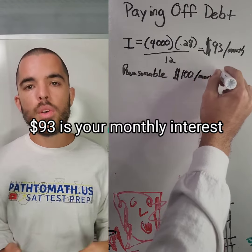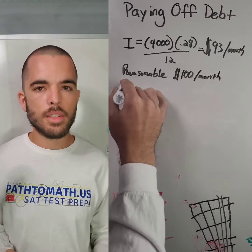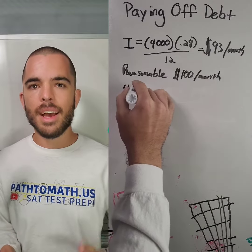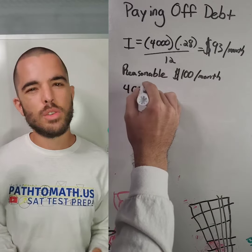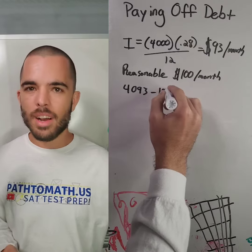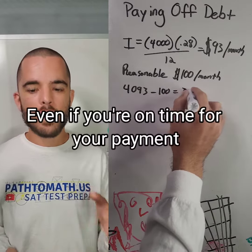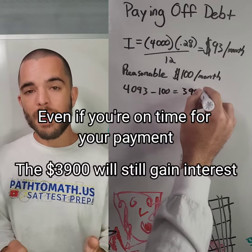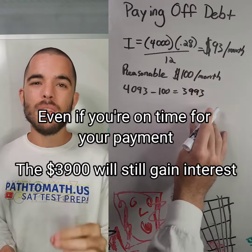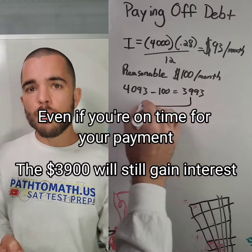A reasonable goal here is to say, okay, $4,000 in debt — I could set aside $100 a month and just slowly knock that away and take care of it. But using math, you're going to see that's not really a reasonable way to handle this amount of debt.